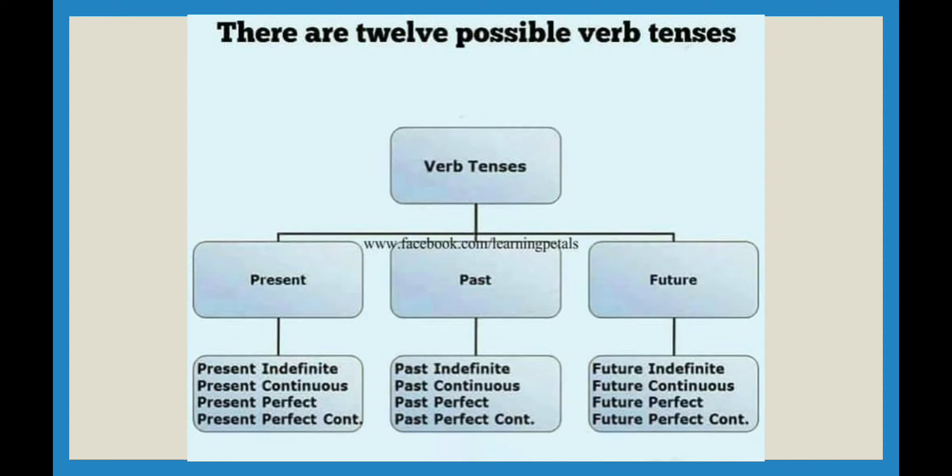Continuous tense tells us an action is in progress. Perfect tense shows the completion of an action in the past, present, or future — it has been completed at the moment we are talking about. Perfect continuous tense shows that the action has started earlier but is still in progress.